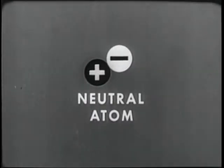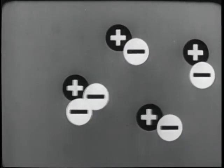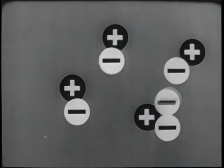This represents a neutral atom in electrical balance. Earlier, we saw how an outside force can break an electron away from an atom and start an electron chain reaction, an electric current flow.